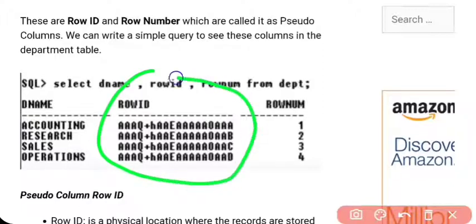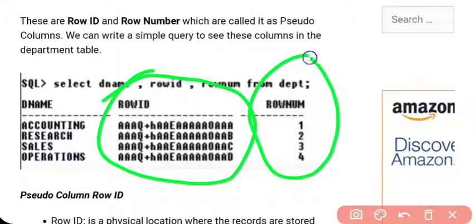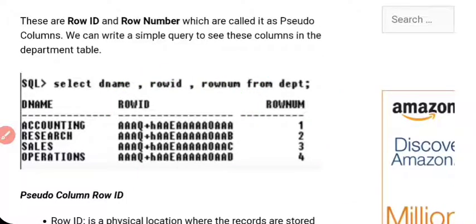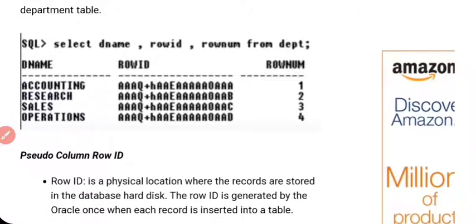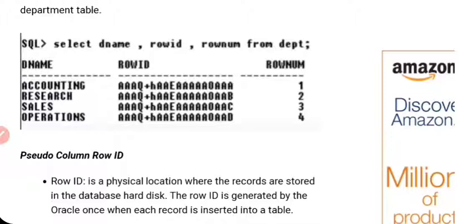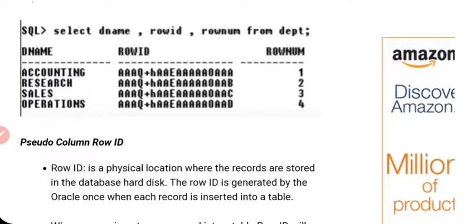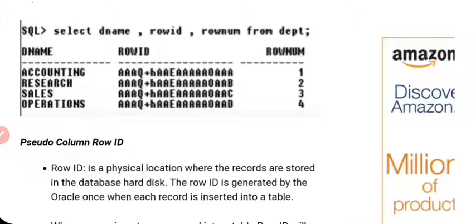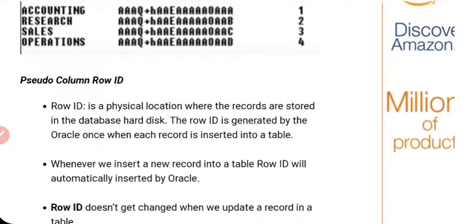ROWID is a long text and ROWNUM is a numerical value. The difference between ROWID and ROWNUM is that ROWID is the physical storage location of each individual record on your database hard disk, while ROWNUM is used to uniquely identify each record in a table. ROWNUM keeps changing when you are modifying your SQL, but ROWID doesn't get changed — that is the key difference.